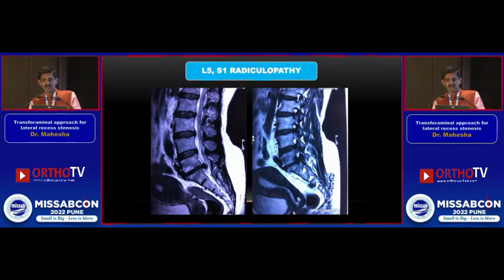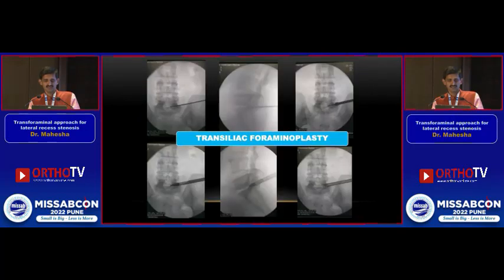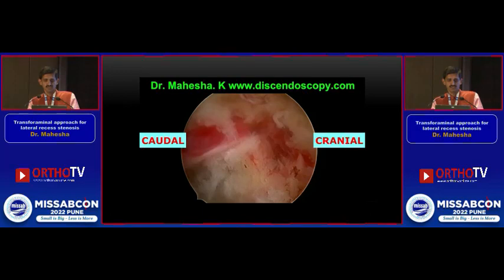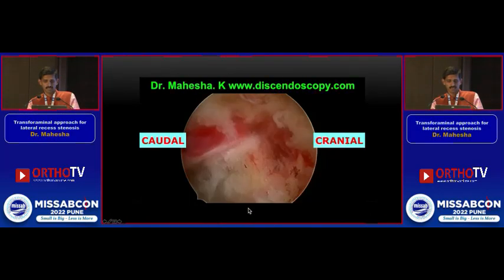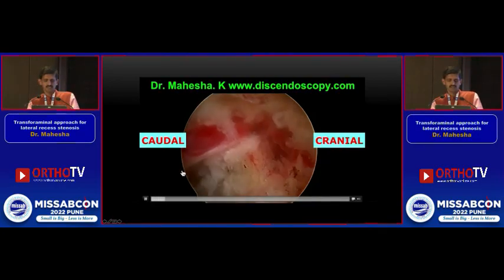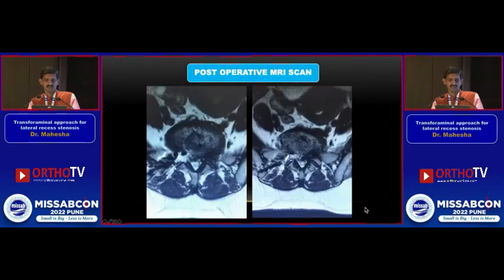This is another case: a 55-year-old lady with L5 and S1 radicular pain due to foraminal stenosis. You can see there is a complete foraminal block. This required a transforaminal approach and this is the final decompression. This is the endpoint of decompression — you can see both roots pulsating very well. This is a post-operative MRI. The patient had excellent relief. This is the axial section.